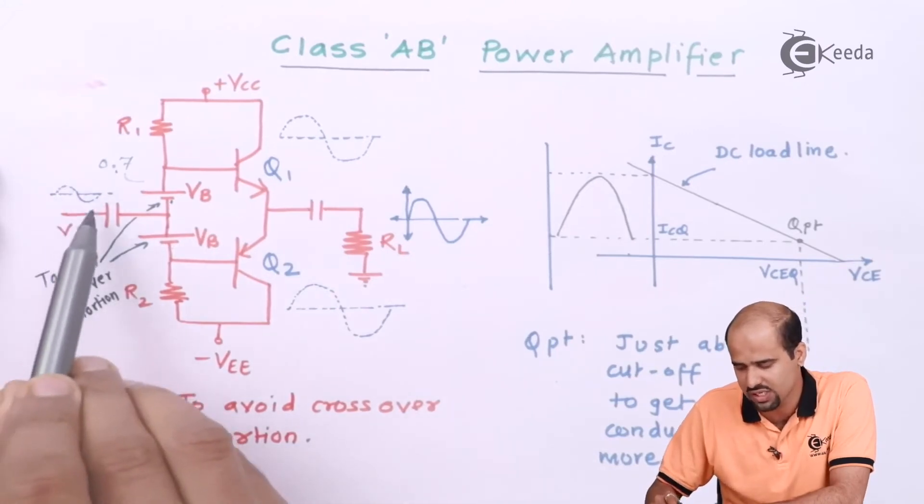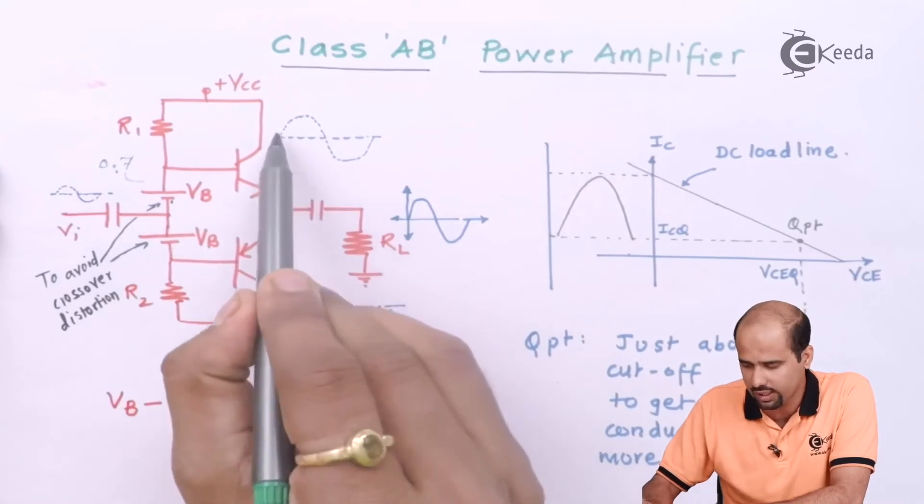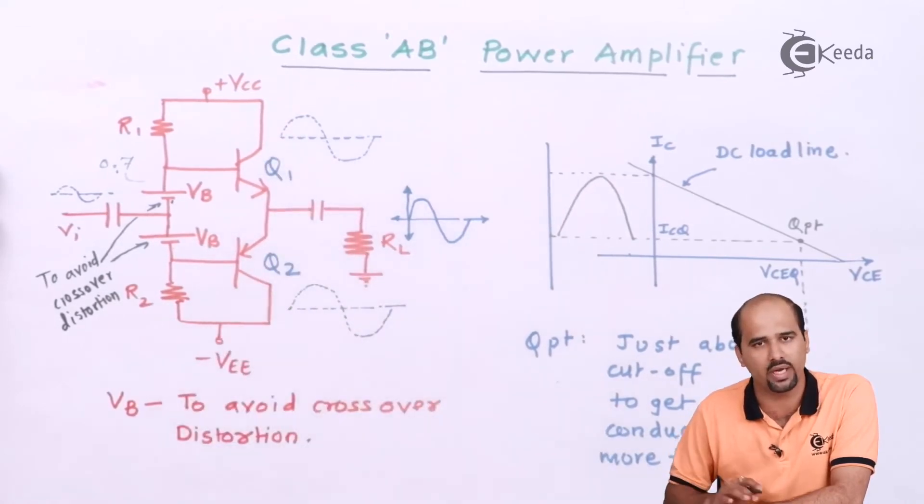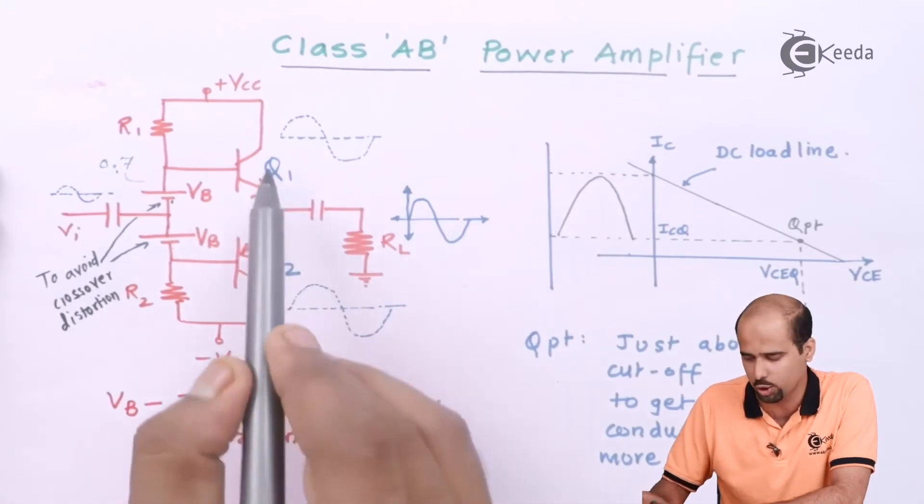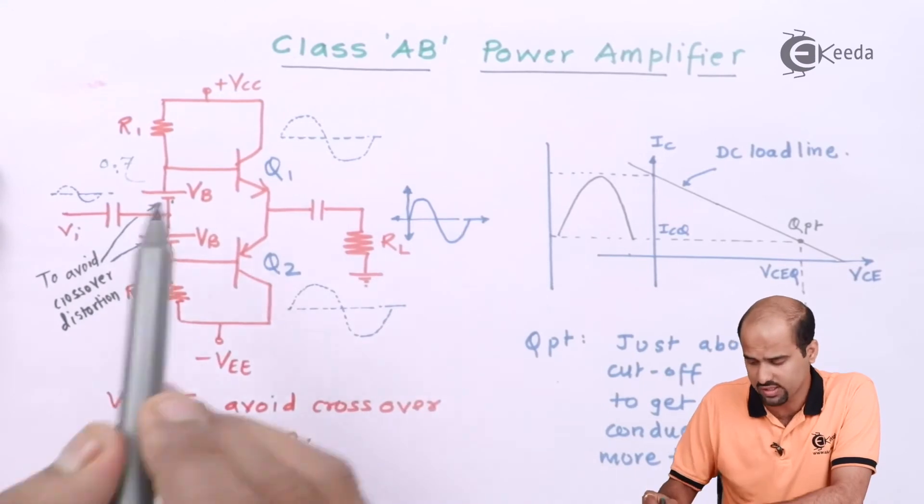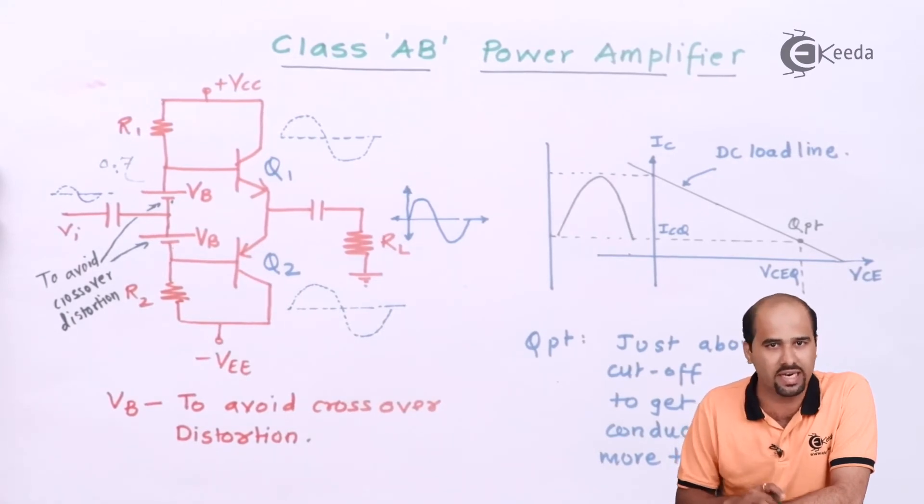How it gets operated? In the first half cycle, I'm saying that Q1 will conduct and Q2 is cut off in the first half cycle. In the second half cycle, Q2 is conducting and Q1 is cut off. Then what is the addition of this particular VB? VB is provided to avoid the crossover distortion.